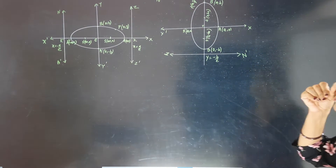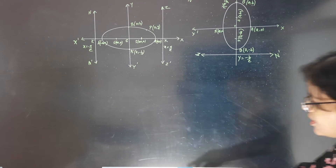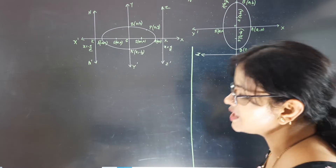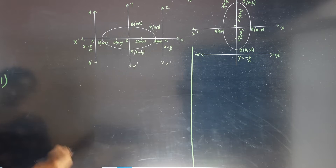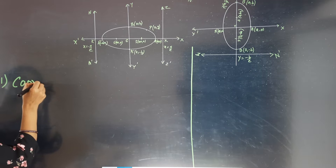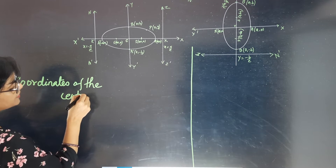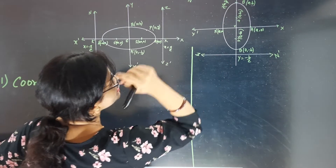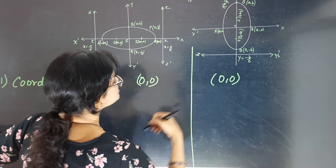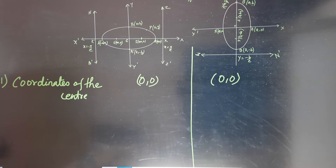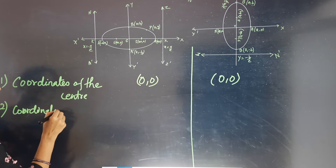Now we write the important points of both ellipses one by one. First: coordinates of the center. For both ellipses, whether the major axis rests on the x-axis or y-axis, the center is at (0, 0).